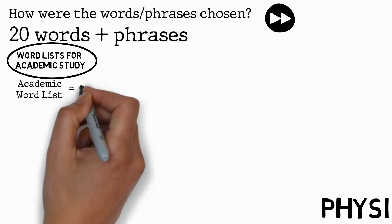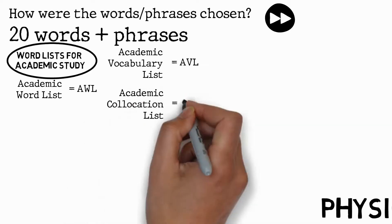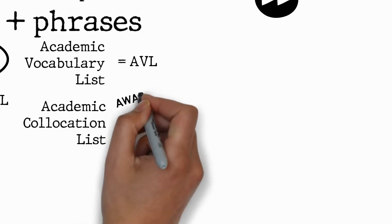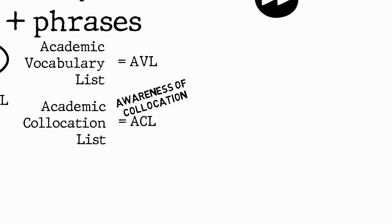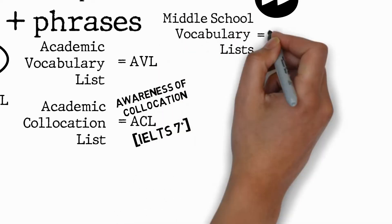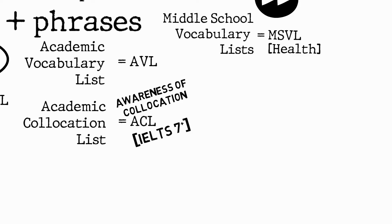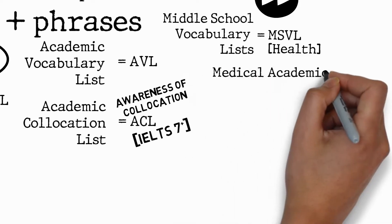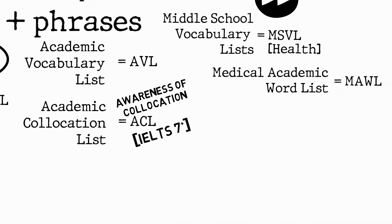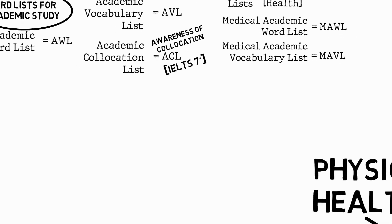We'll use the Academic Word List and also the Academic Vocabulary List and the Academic Collocation List — a useful list if you want to show the awareness of collocation needed for IELTS band 7 and above. For health, there are also some other good lists: the British School Vocabulary List, which has a section on health, the Medical Academic Word List, and the Medical Academic Vocabulary List.